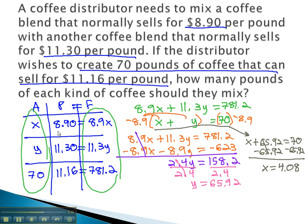Clearly labeling our answers, x is the amount that was selling for 8.90 per pound. That means we need 4.08 pounds that will sell at 8.90 per pound. Y, the 65.92 pounds, is what sells for 11.30 per pound.